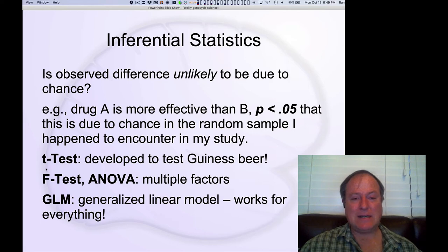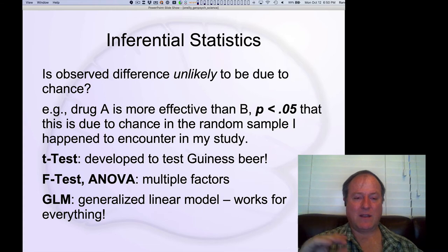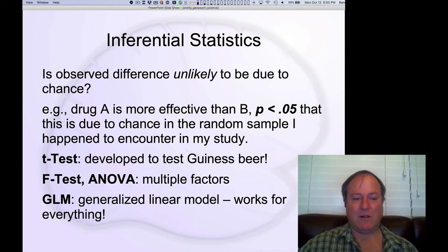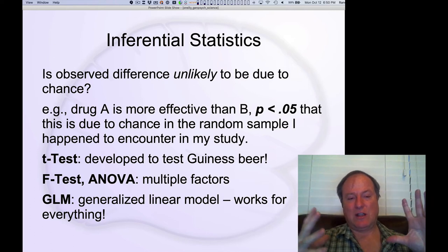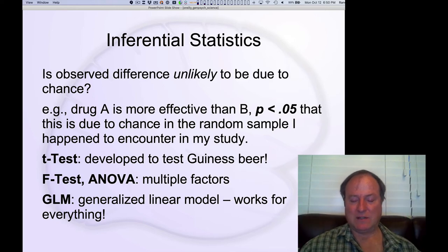95 out of 100 times you're going to be right by saying this was really an effect — for example, of music in that one study. There's a t-test that was actually originally developed to test differences in Guinness beer, evaluating different ways of brewing and different ingredients. The F-test or ANOVA — analysis of variance — allows you to look at multiple different factors. And then the integrated mega-test of all of these is something called the generalized linear model, which subsumes correlation as well as these kinds of inferential tests and is typically learned in grad school.